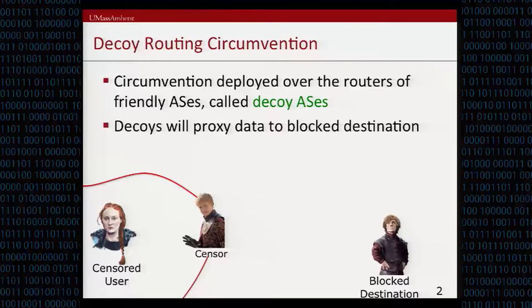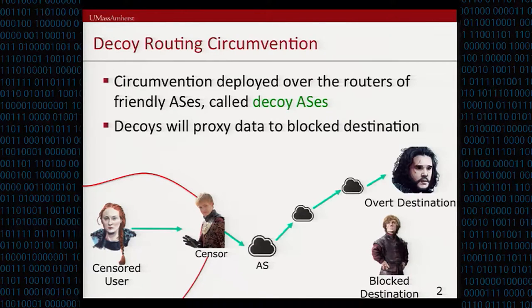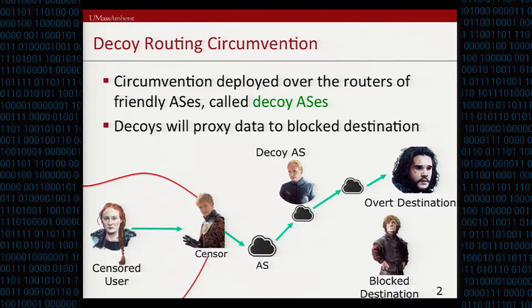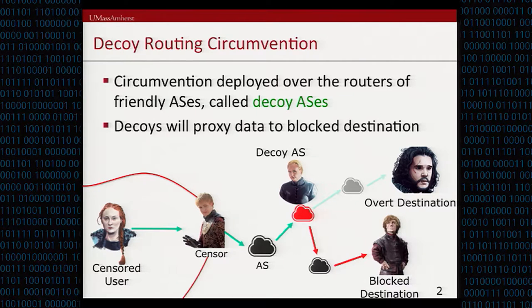Suppose that you have a censored user who is being monitored and watched by a vicious censor, and he wants to talk to a blocked destination. The censored user will establish a connection and send traffic to an overt destination, and the censor is fine with this connection. If the censored user is lucky enough and the connection is intercepted by one of these friendly ISPs — which we call decoy autonomous systems — that decoy autonomous system will reroute the censored user's traffic to the intended blocked destination. This is essentially how decoy routing works.